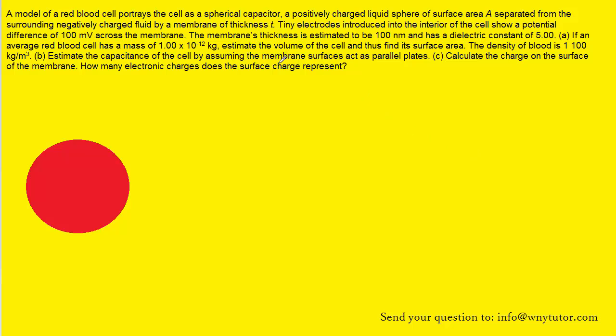In part A, we are asked to estimate the volume of this red blood cell, and most of us know that the density of an object is equal to its mass divided by its volume. The question gives us the density of this red blood cell and also gives us the mass, and so we can rearrange this equation and solve for the volume of the red blood cell.